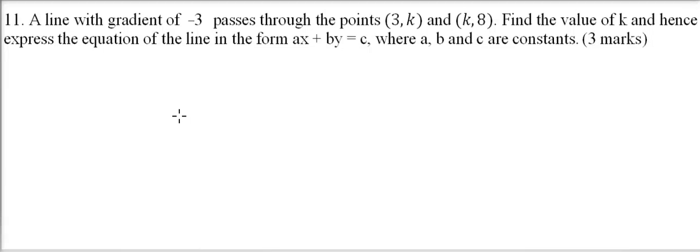In this question, we are told a line with gradient -3 passes through the points (3,k) and (k,8). Find the value of k and hence express the equation of the line in the form ax + by = c, where a, b, and c are constants. You get 3 marks.